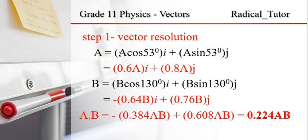We can see the result in terms of the i component and j component — I mean vector A's i component and j component — and here is the angle giving the dimension of the A component.